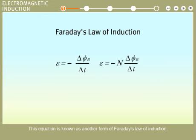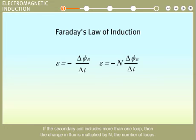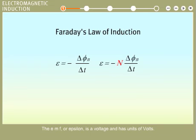If the secondary coil includes more than one loop, then the change in flux is multiplied by N, the number of loops. The EMF, or epsilon, is a voltage and has units of volts.